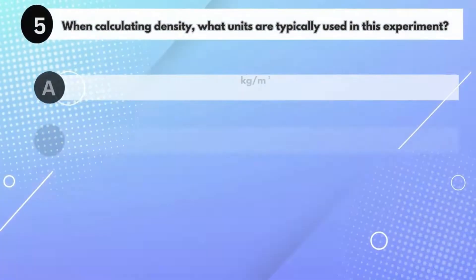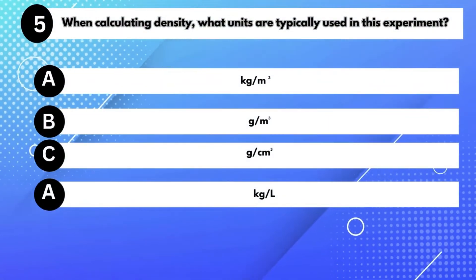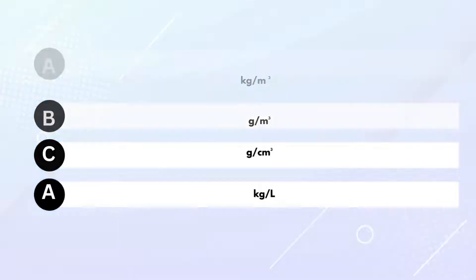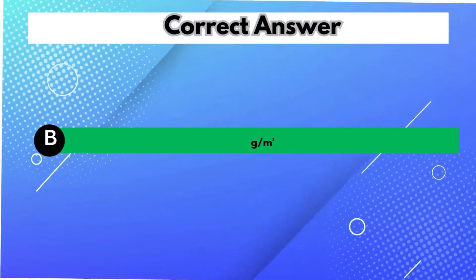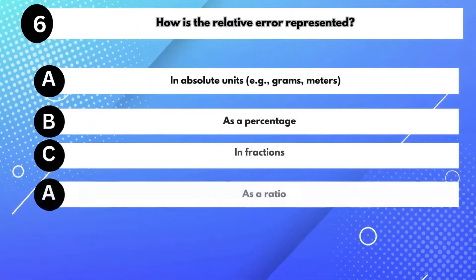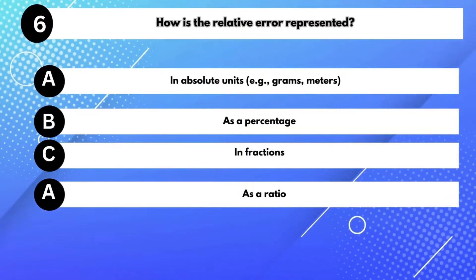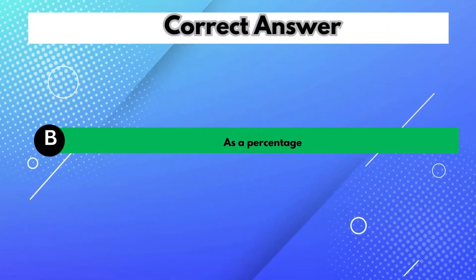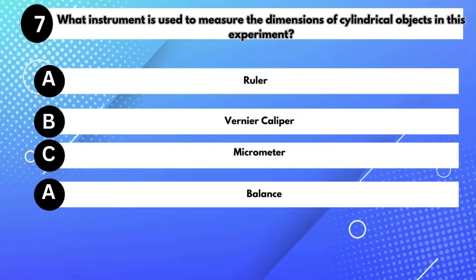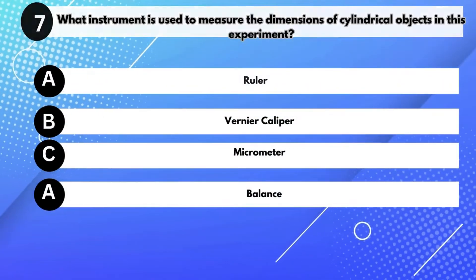When calculating density, what units are typically used in this experiment? Answer B: g/cm³. How is the relative error represented? Answer B: As a percentage. What instrument is used to measure the dimensions of cylindrical objects in this experiment?